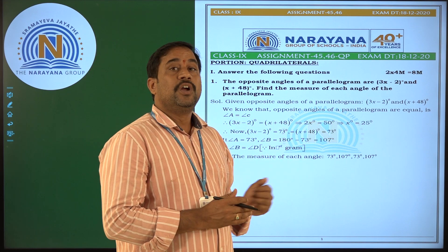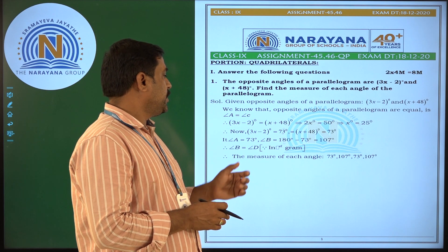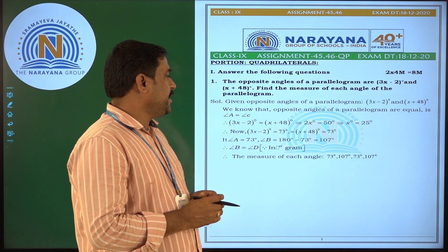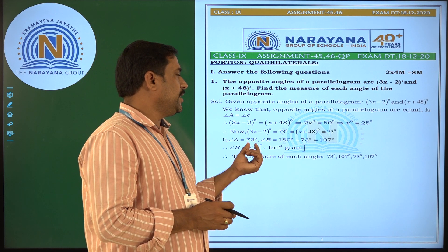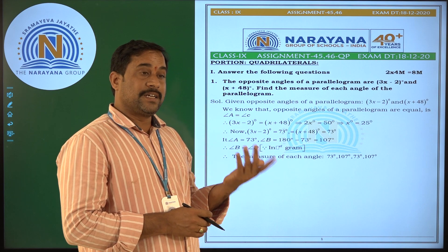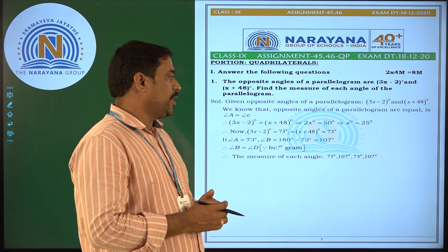Then x equals 25 degrees. So I can apply: angle A equals 73, angle B equals 180 minus 73, which gives me 107.